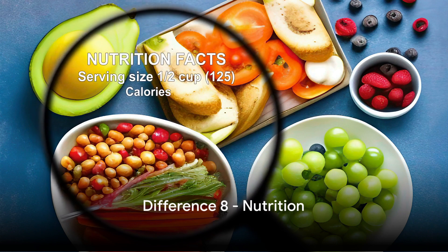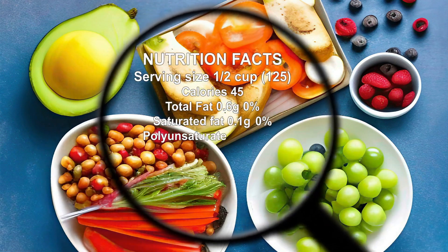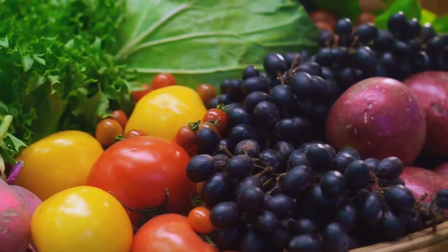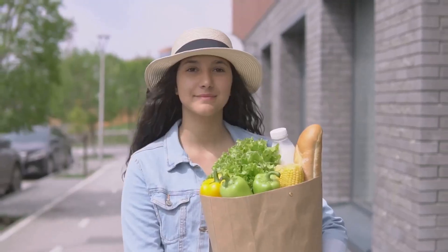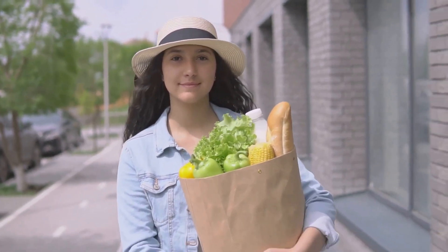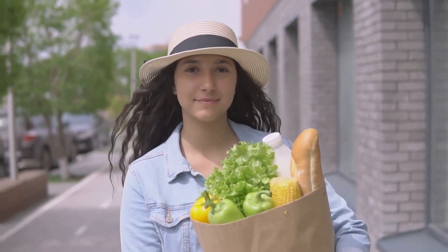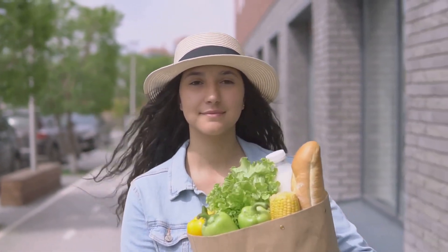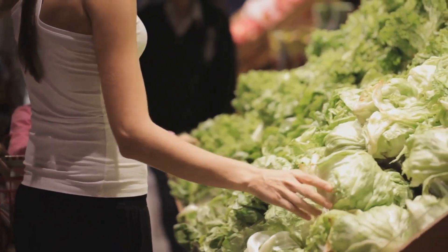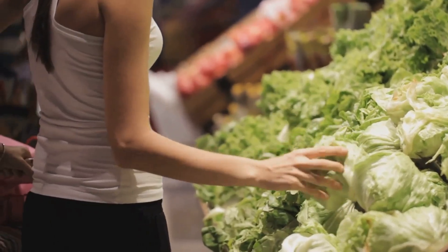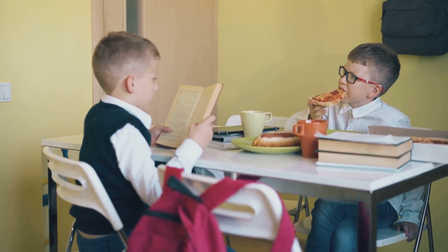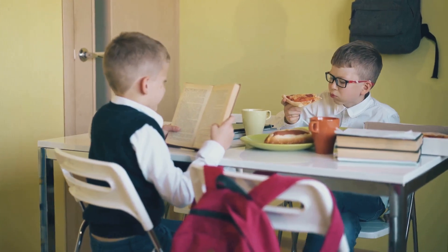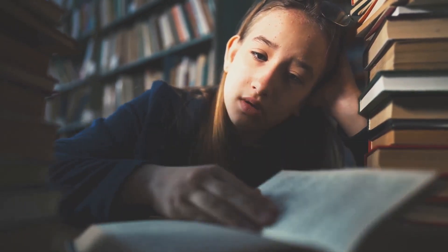Number 8 on our list is nutrition. What we eat is not just about keeping our stomachs full — it's about fueling our brains for the day. A well-balanced diet can enhance cognitive function, improve concentration, and even boost academic performance. Wealth can play a significant role in shaping a child's diet. Families with more financial resources often have better access to fresh, nutrient-rich foods, which can positively impact a child's learning abilities. On the other hand, less affluent families may struggle to afford these nutritious options, and their children might end up consuming more processed foods that lack essential nutrients. This disparity in nutrition can create a gap in educational outcomes. After all, it's challenging to focus on algebra or Shakespeare when your stomach is growling. Nutrition is not just about physical health, but also about academic health. That's why it's number 8 on our list.